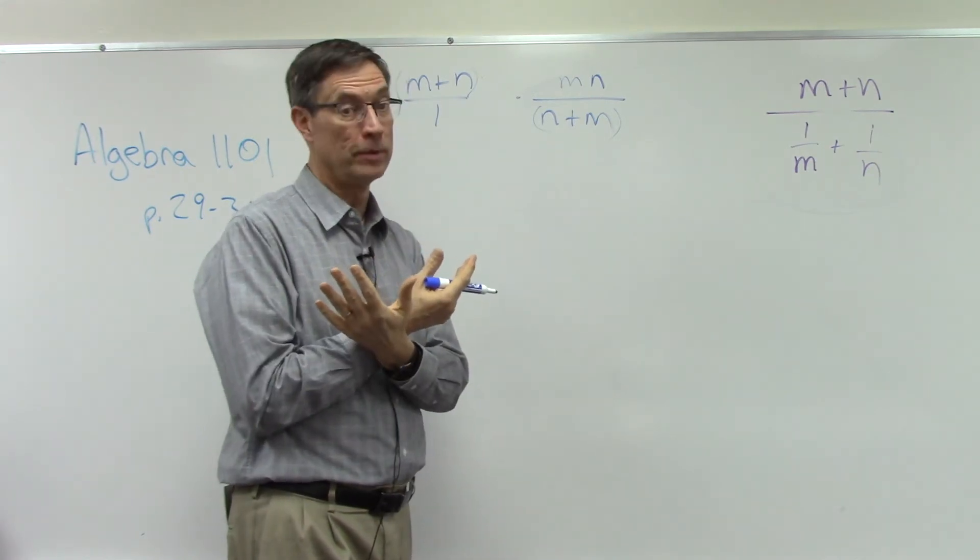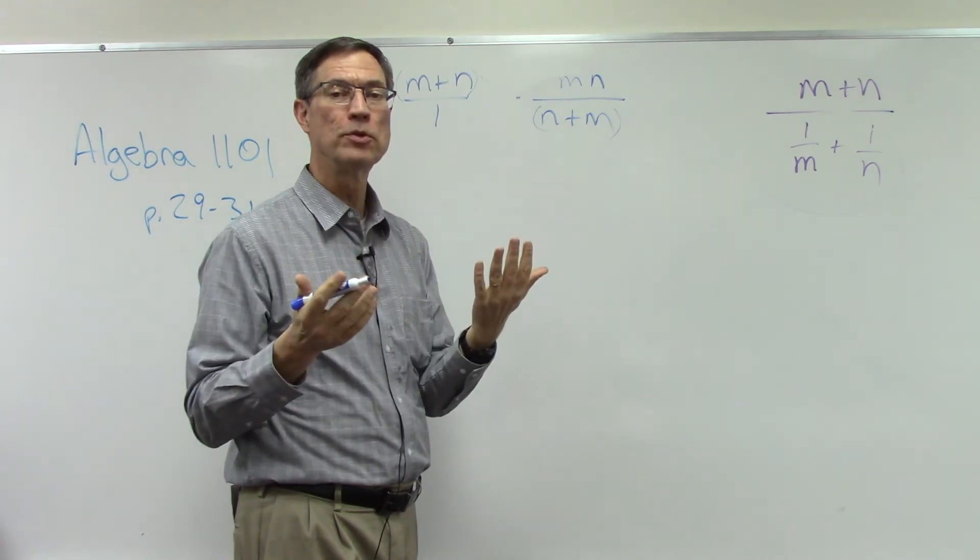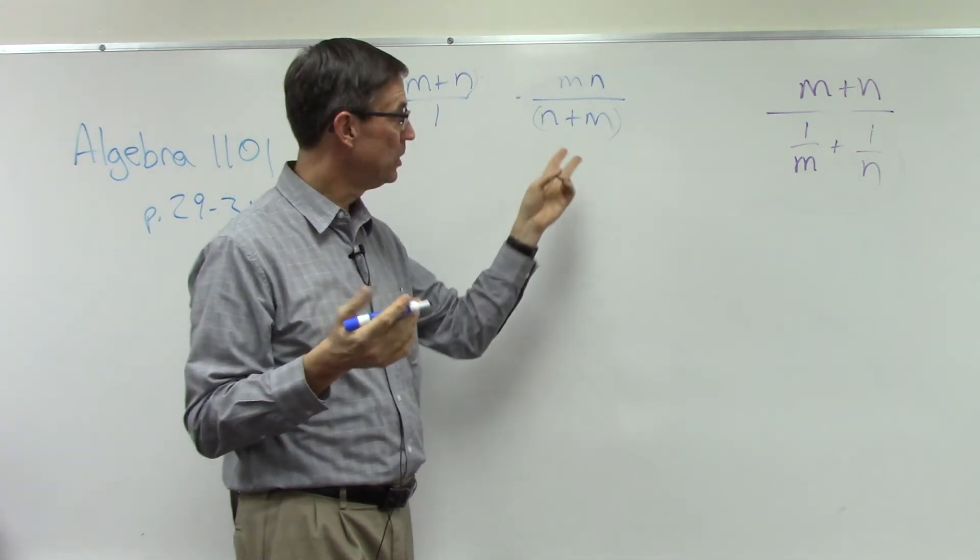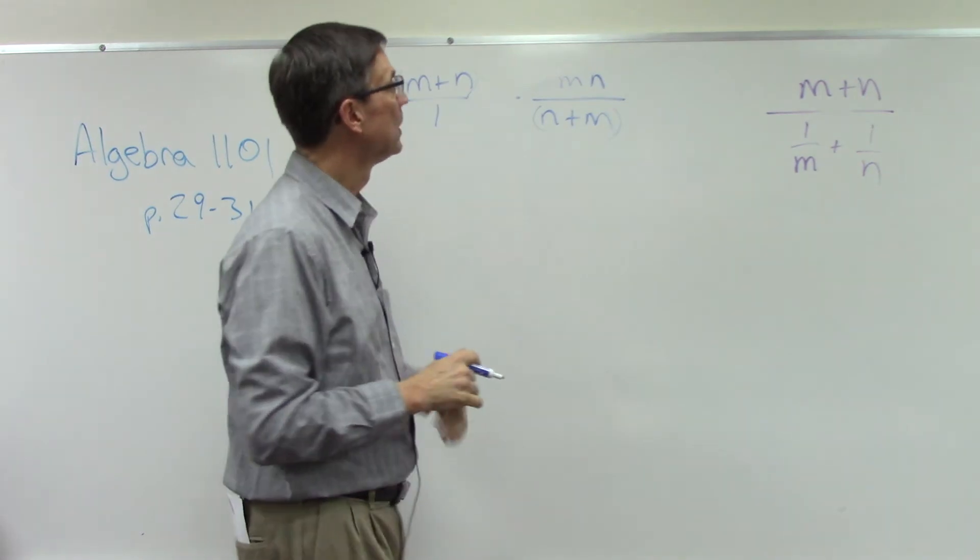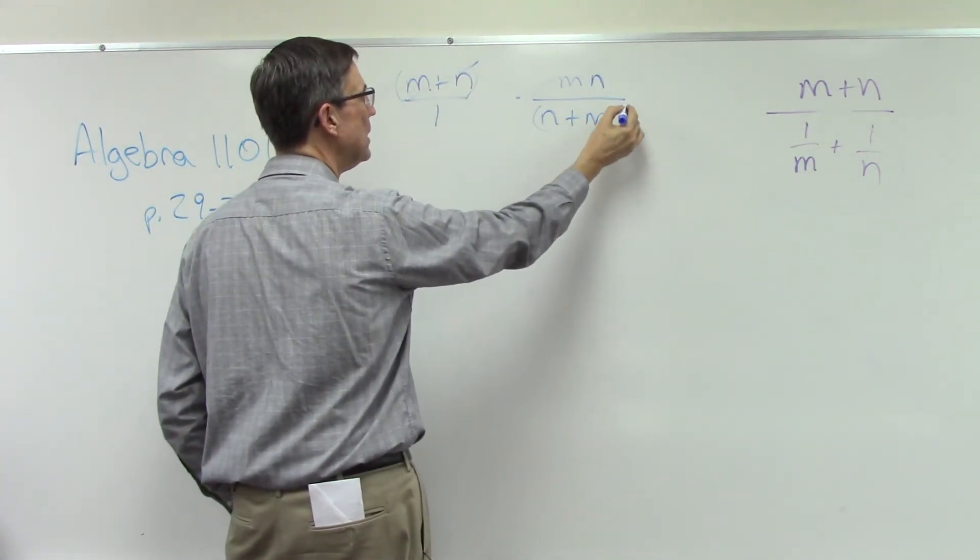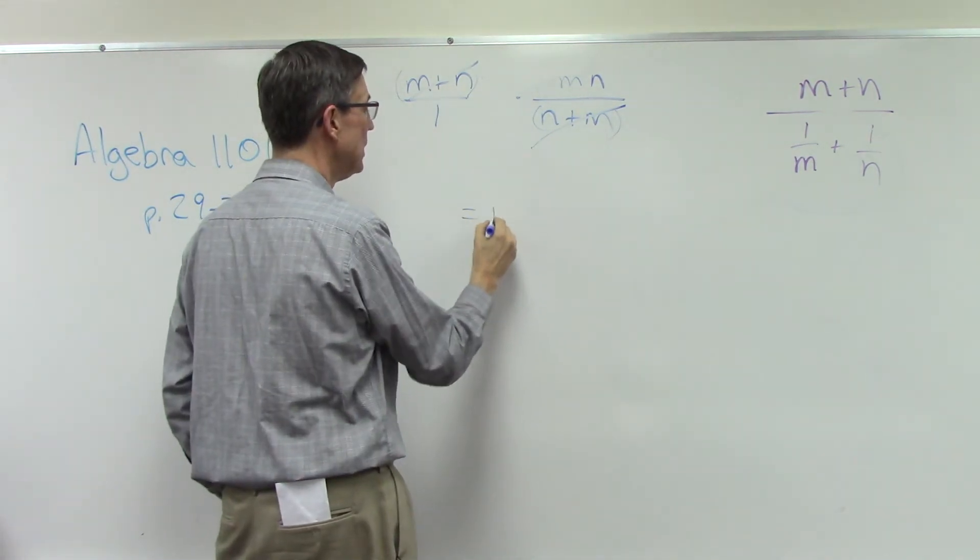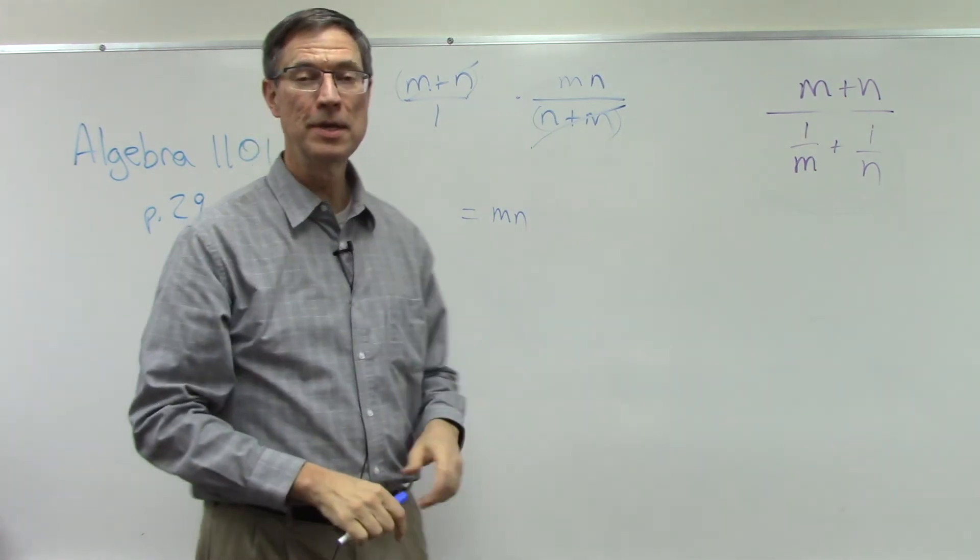And then we'll remember the commutative property says that if we have two things we're adding, we can change the order and it does not change the answer. Now we can't do that for subtraction. We can't do that for division. But addition, sure enough, we can do that. So m plus n is the same factor as n plus m. So that cancels out and we just end up with mn. Isn't that easy?